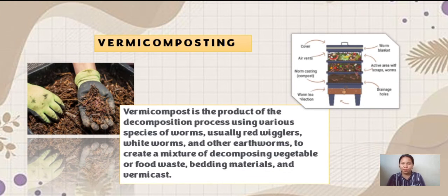Next is vermicomposting. Vermicompost is the product of the decomposition process using various species of worms, usually red wigglers, white worms, and other earthworms, to create a mixture of decomposing vegetable or food waste, bedding materials, and vermicast.